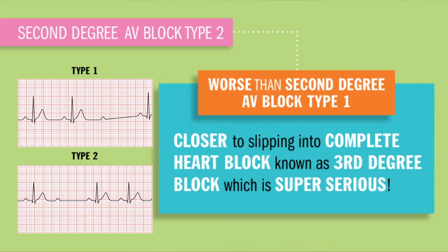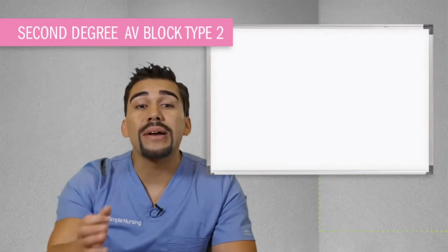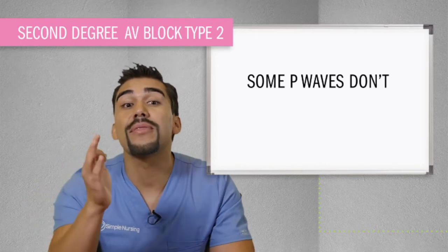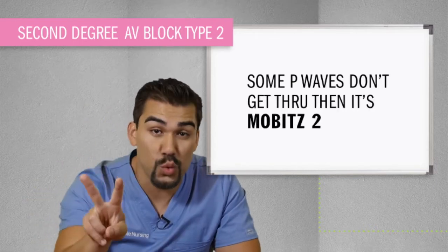Now the biggest indicator that sets this rhythm apart from all the other blocks is the little P wave. Some P waves are not going through this bundle of His area after they go through that AV node. Basically, the charge is not getting down to those ventricles. So please remember, if some P waves don't get through, then you have that Mobitz II.